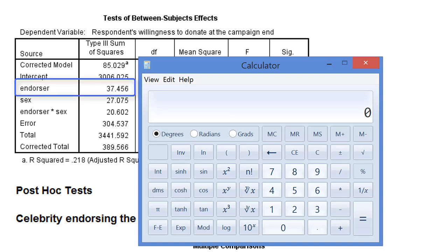We take the sum of squares for the endorser effect, which is 37.456, and we divide it by the corrected total, 389.566.